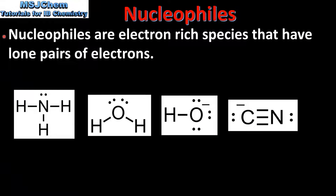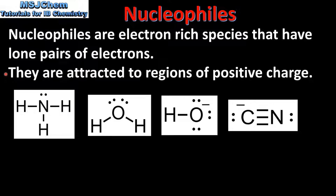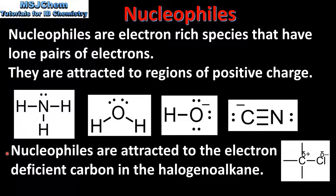Next we look at nucleophiles. Nucleophiles are electron rich species that have lone pairs of electrons. Because they are electron rich, nucleophiles are attracted to regions of positive charge. Here we have some examples of nucleophiles. From left to right we have ammonia, H2O, the hydroxide ion and the cyanide ion. Nucleophiles such as these are attracted to the electron deficient carbon in the halogenoalkane.